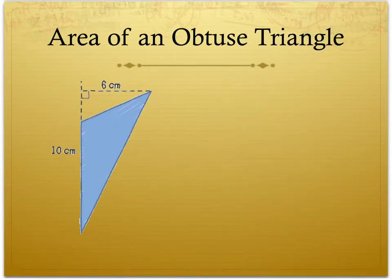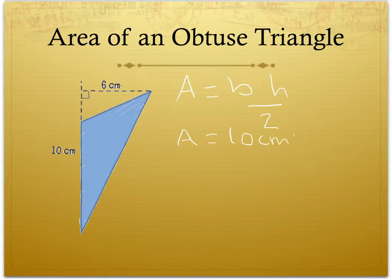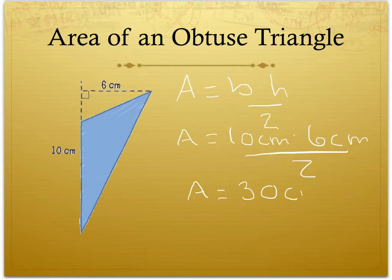Now that we know that an obtuse triangle can be arranged into a parallelogram, we can use the same formula that we have been using for the past two examples. So area is equal to base times height divided by 2, or area is equal to 10 cm times by the height of 6 cm, divided by 2, which gives us an area equal to 30 cm squared.